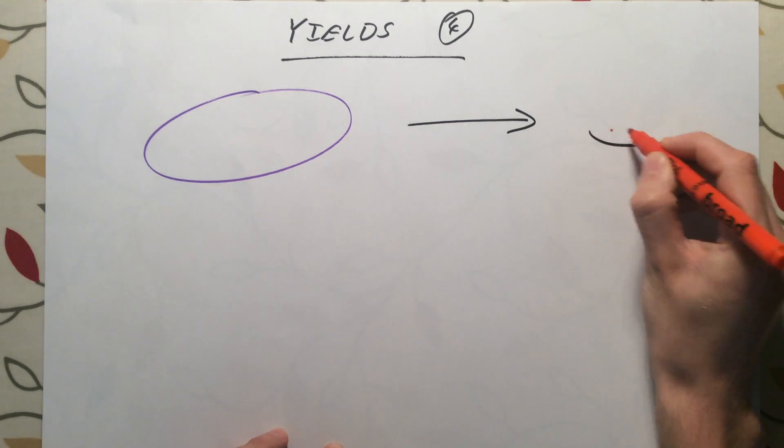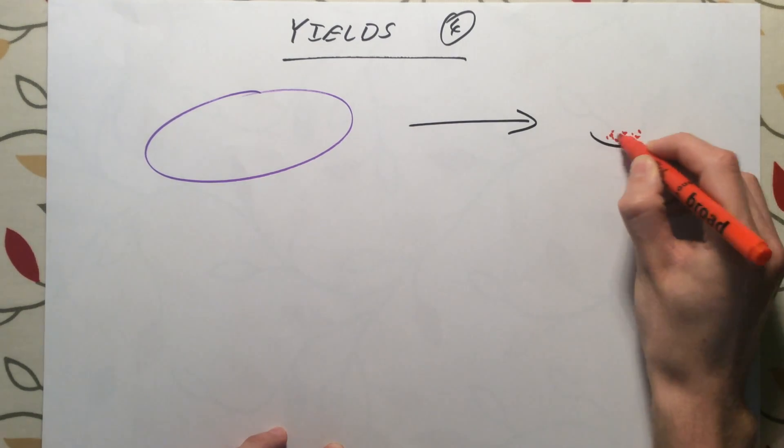The final video in Edexcel additional chemistry is about yields of chemical reactions. The yield of any reaction is the amount of product or the amount of useful product you make at the end. So if you have a reaction and you want to get some solid product at the end.